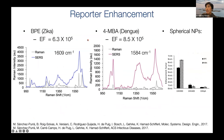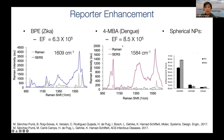We measure SERS enhancement by comparing BPE alone (shown in gray) to BPE on the nanostar (shown in purple). Looking at the peak at 1609 cm⁻¹, we get enhancement factors on the order of 10⁵. This is not the most spectacular enhancement factor, but good enough to move forward. We do the same for the Dengue nanotag using 4-MBA, getting enhancement factors in roughly the same range. We also find that changing the nanoparticle shape to spheres gives much poorer enhancement, so we stick with nanostars.